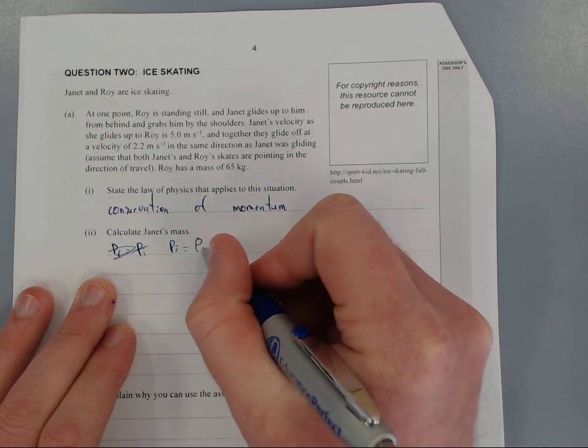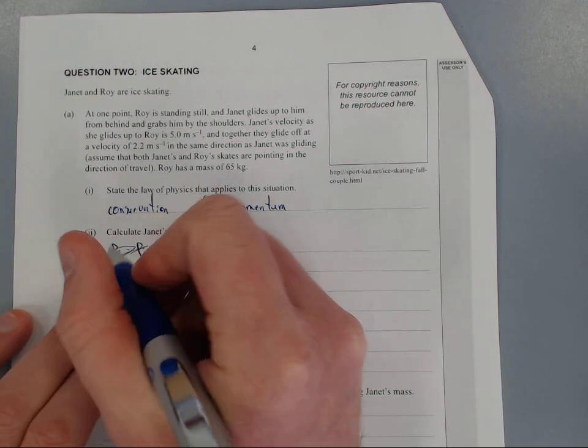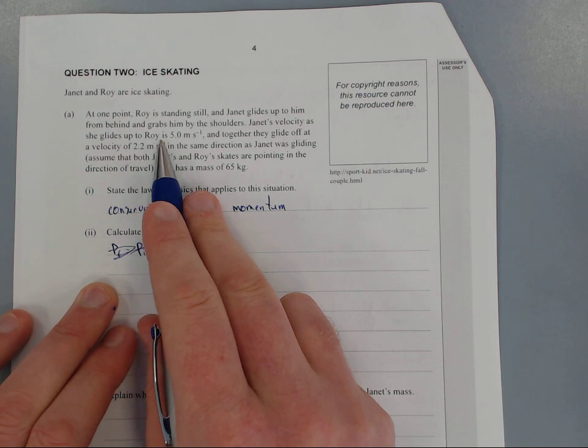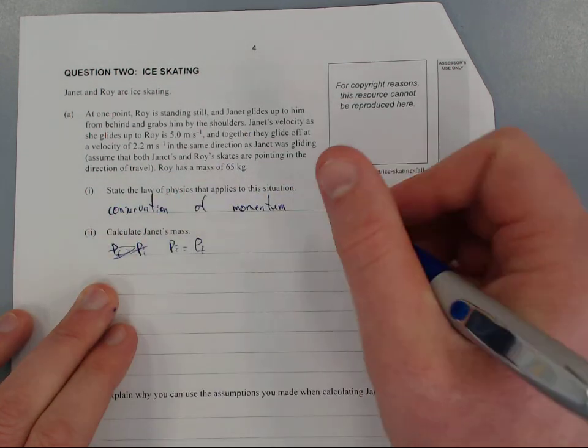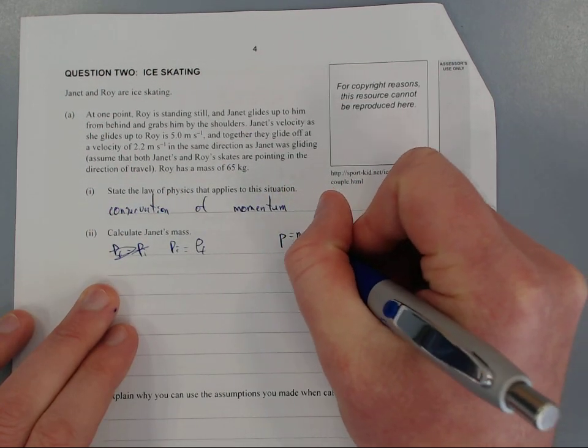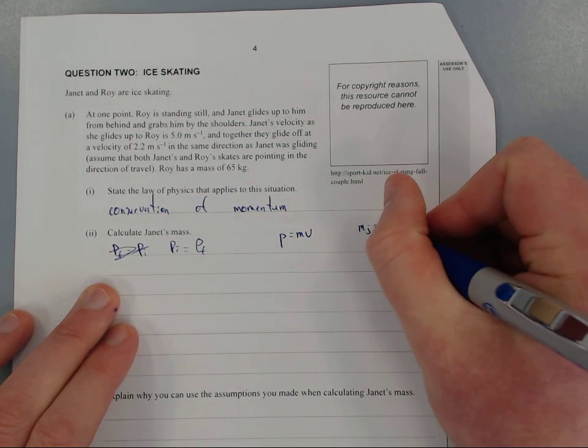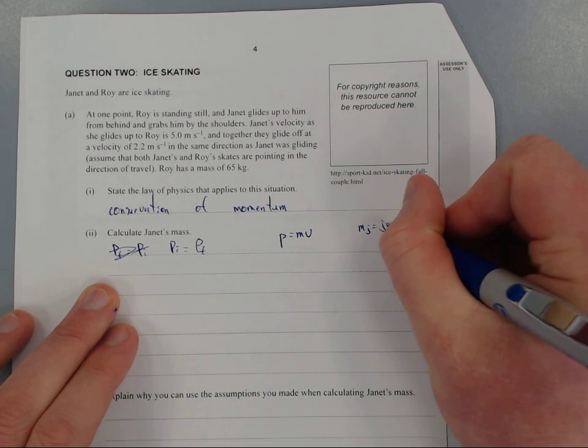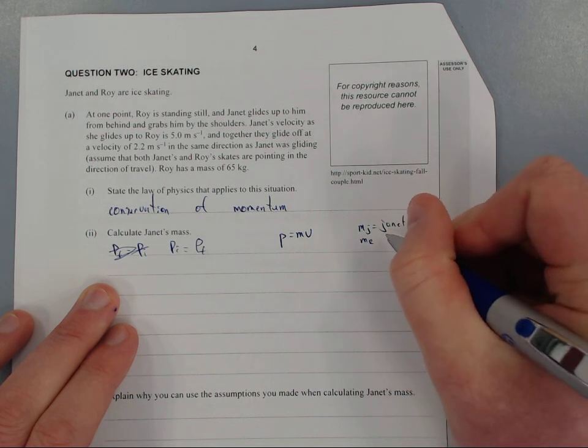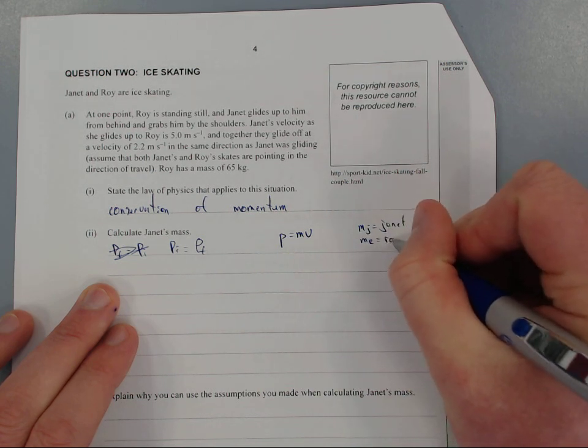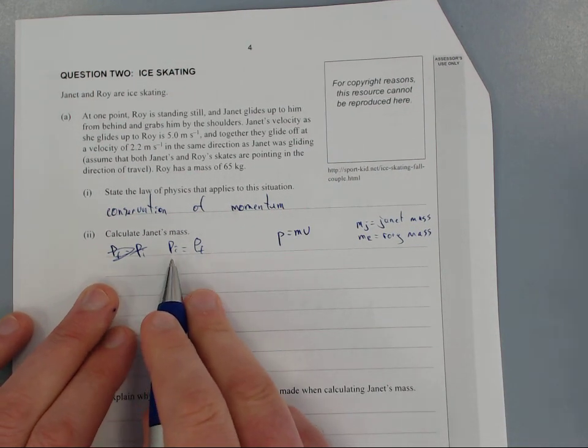The initial momentum is Janet's velocity of 5 meters per second. Momentum equals mass times velocity. I'll use MJ for Janet's mass and MR for Rory's mass. Let's write out the equation.